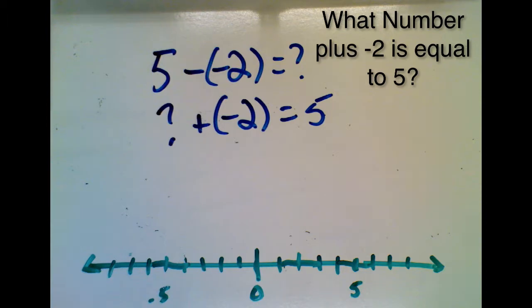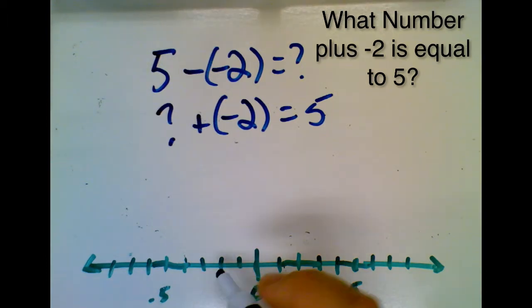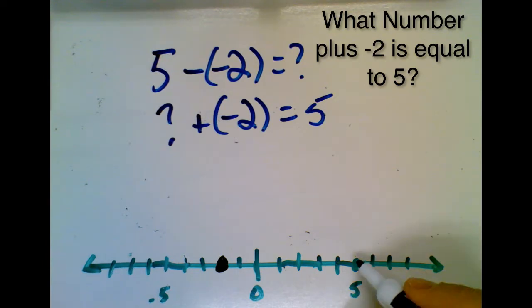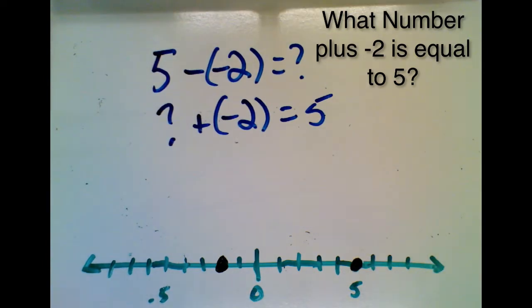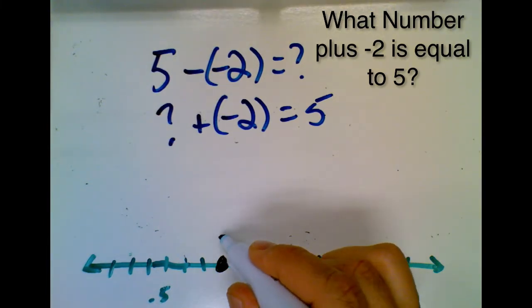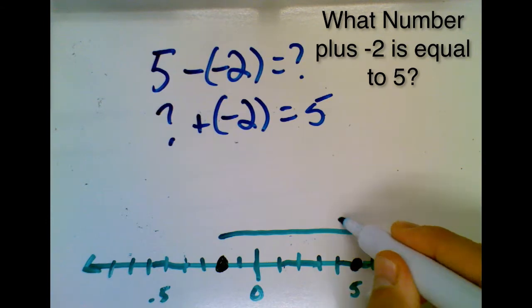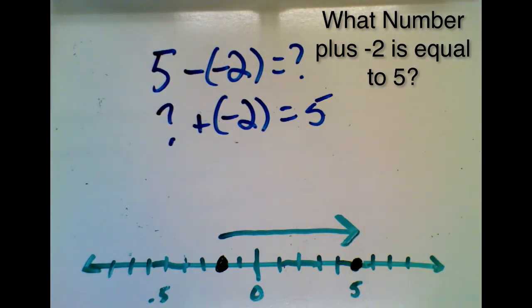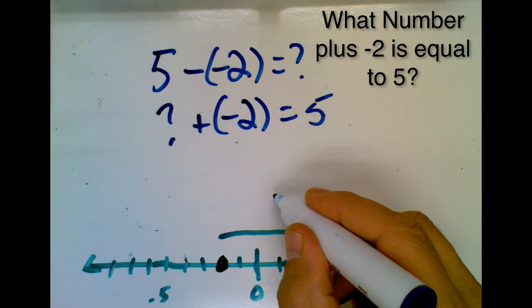And so once again, we put our numbers on the number line. Here is negative 2. Here is 5. And we draw an arrow from negative 2 to 5 to get our answer. And so that answer, in this case, is positive 7.